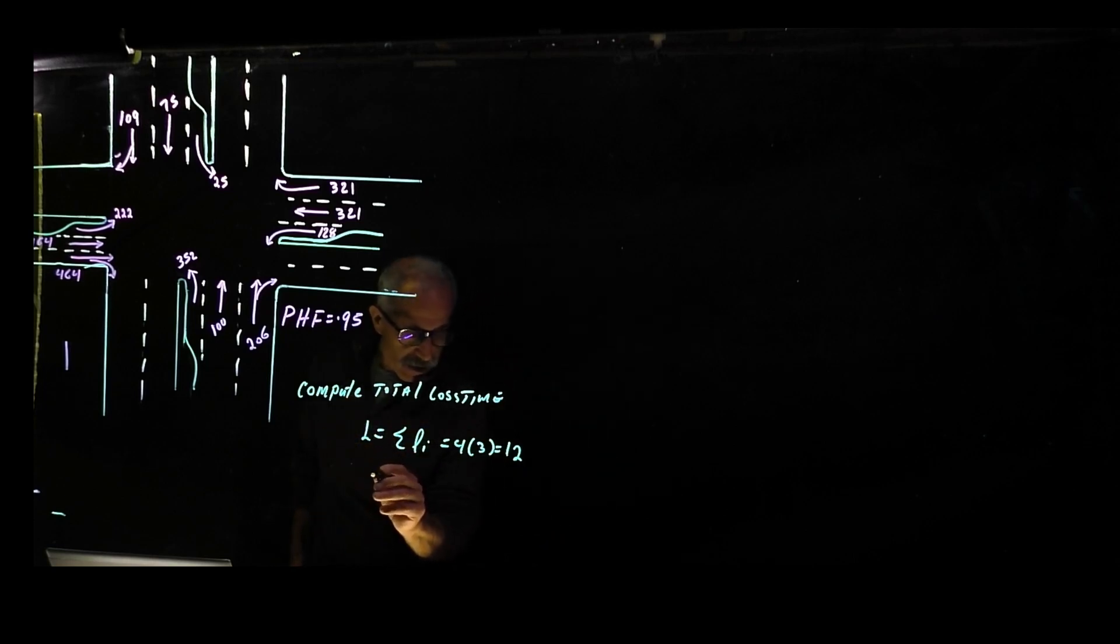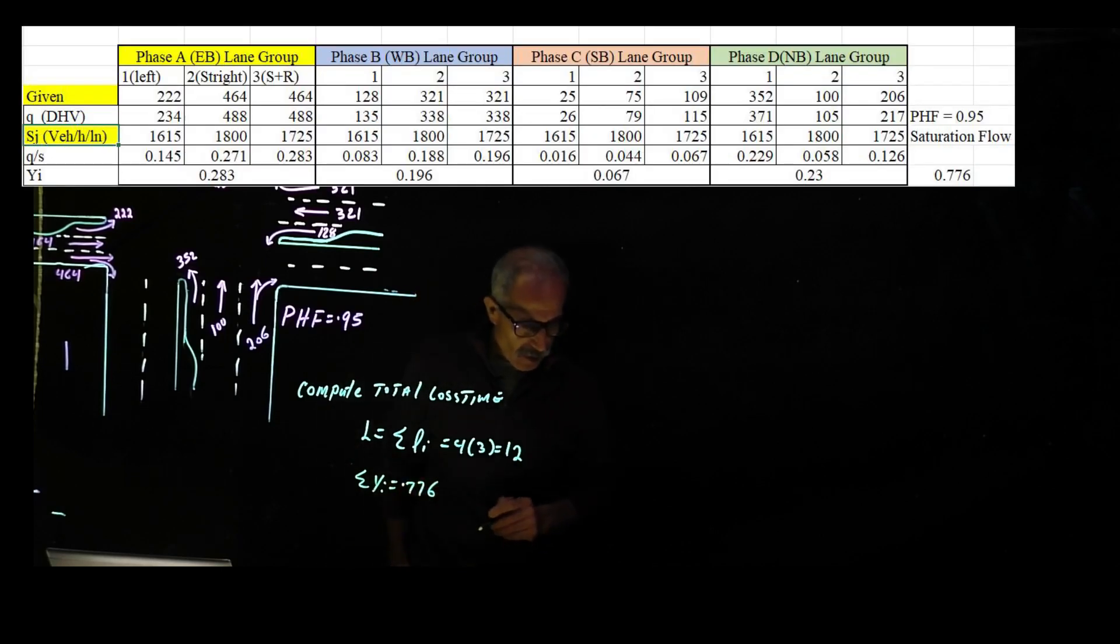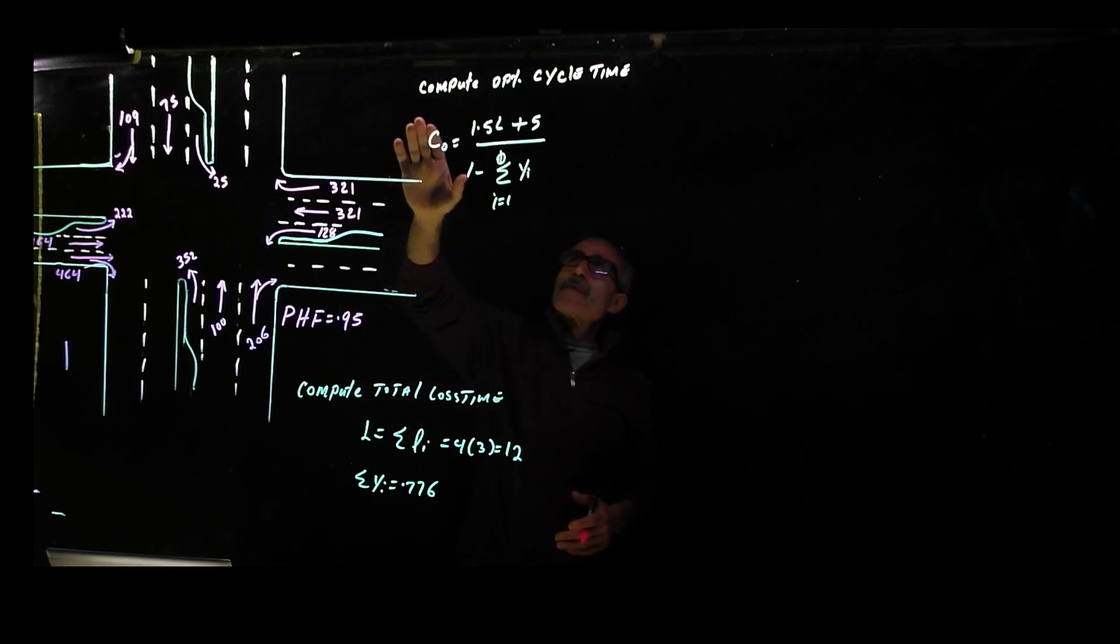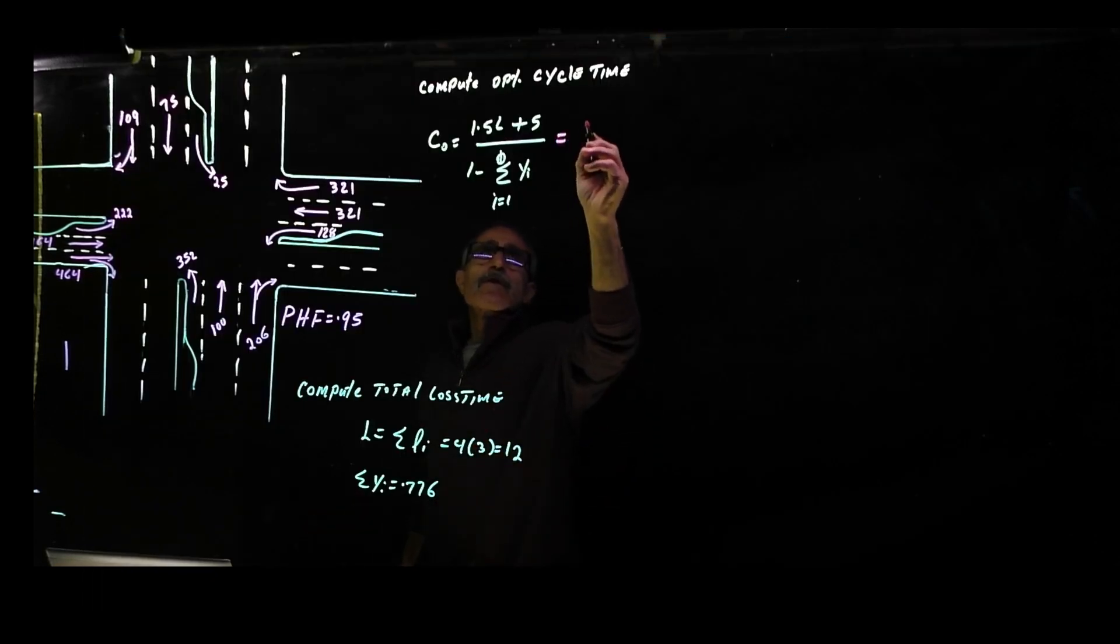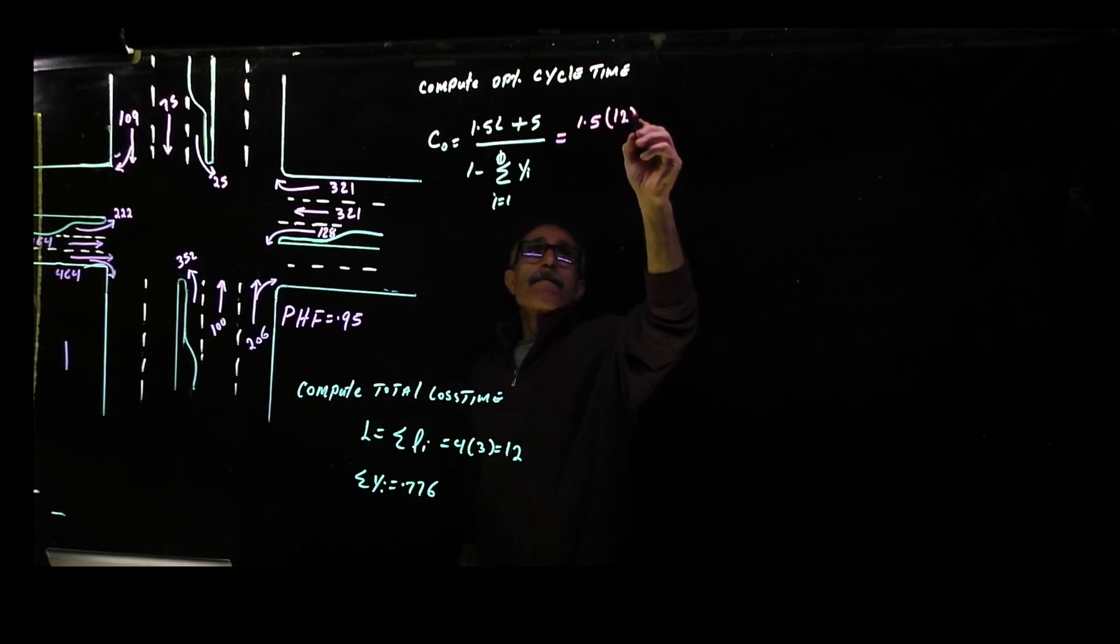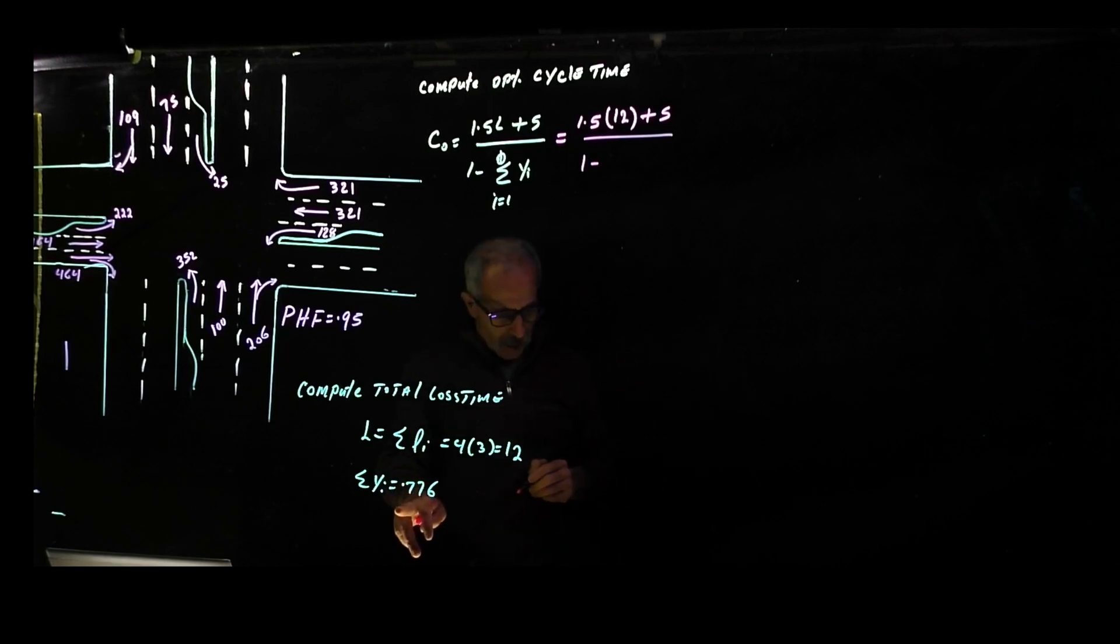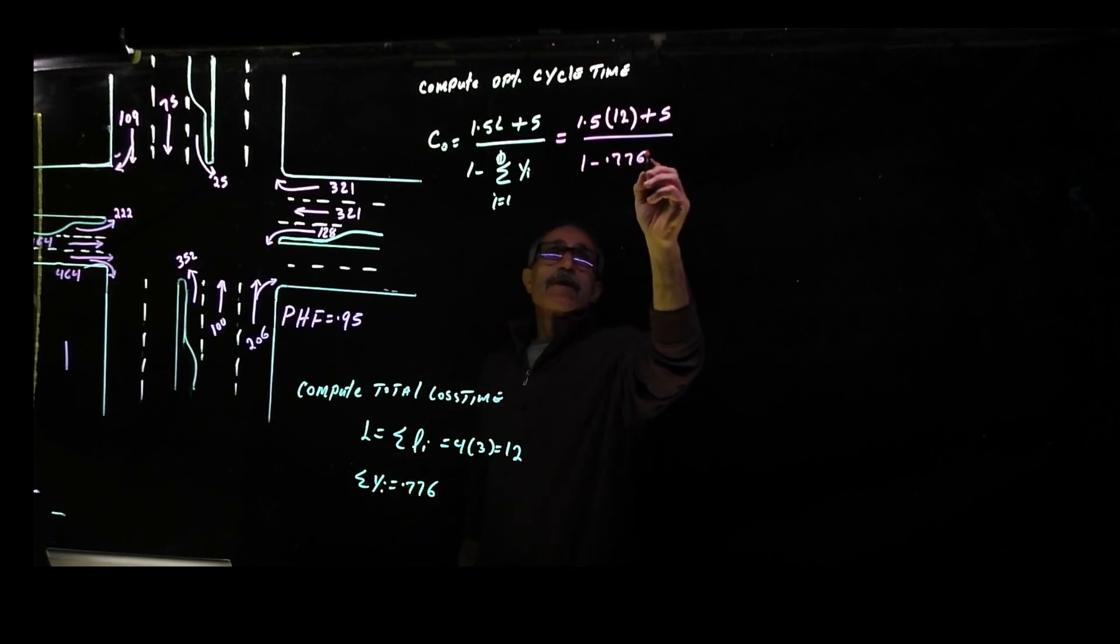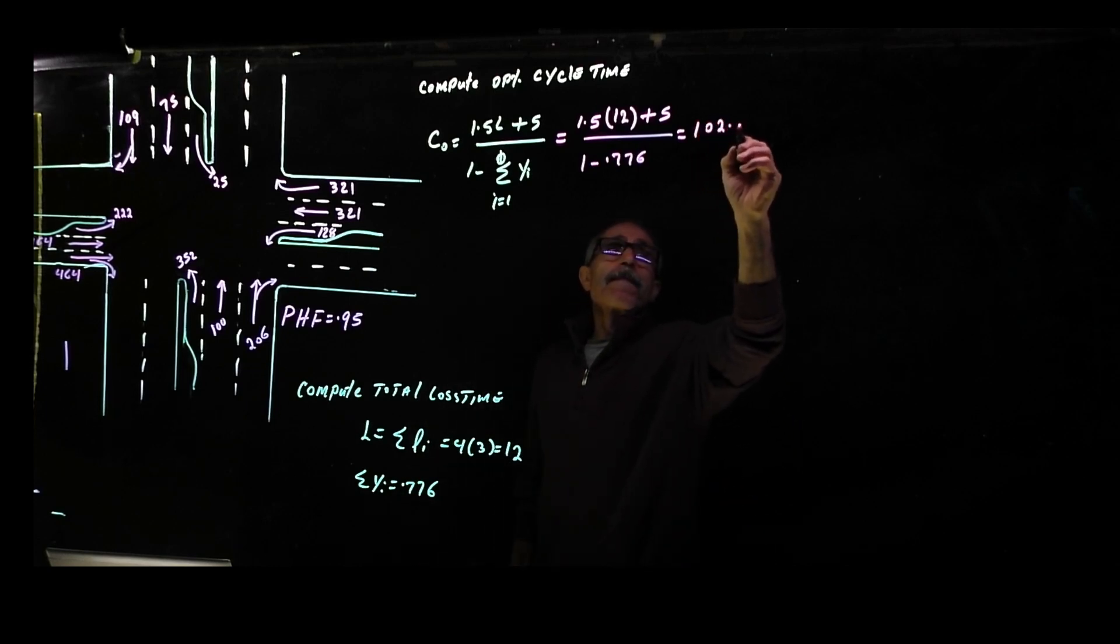From the Excel we had the summation of Yi came out to be 0.776. Now we're going to compute optimum cycle time. It's given by this equation which is 1.5 times lost time plus 5, divided by 1 minus summation of all the individual Yi. So it's equal to 1.5 times 12 plus 5, divided by 1 minus 0.776. Our total cycle time comes out to be 102.68 seconds.